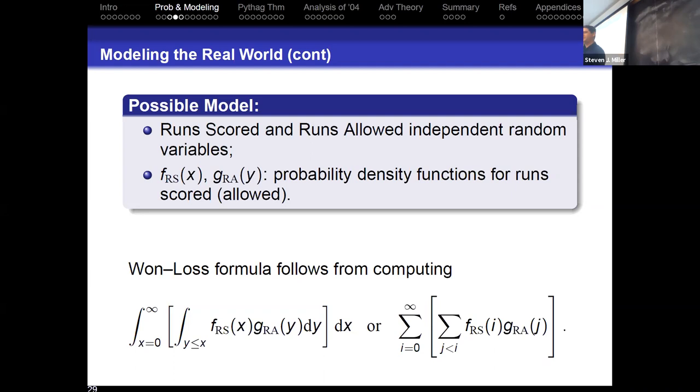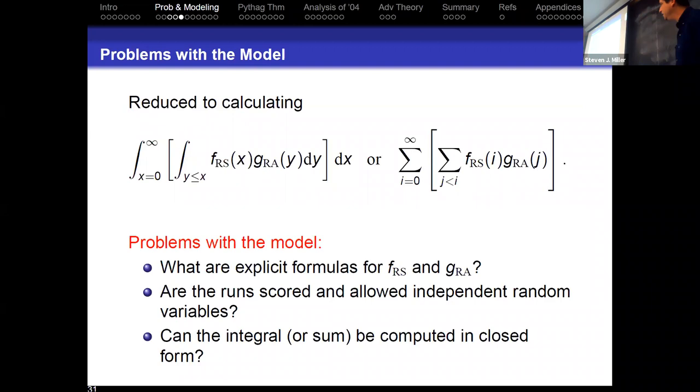Discrete. Is there a chance of seeing the headline, Sox rally in ninth, beat Yankees by score of Pi to E? I'd love to see that headline on so many levels, but we're not going to see that. Do you think we should use discrete or continuous? I remember you saying that discrete is usually a lot more difficult. Yeah, we don't really have as much nice formulas for sums in discrete, but we do for integrals. So we're going to use the continuous case. So we're reduced to calculating this integral, and then, you know, I mentioned earlier some of the problems with the models. We know they're not independent, runs scored and runs allowed. And then if we actually want to do this, what are the formulas? What are the densities? And can the integral be done in closed form?